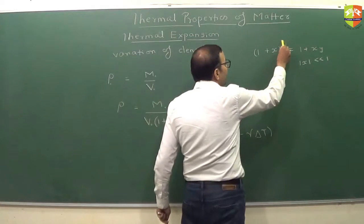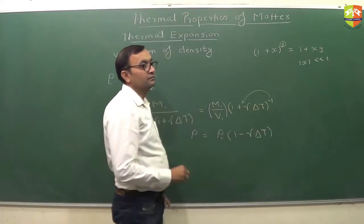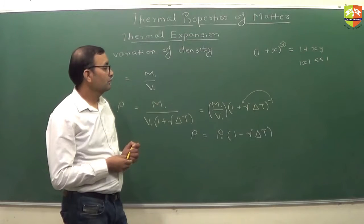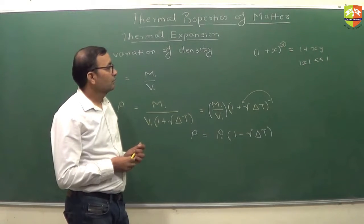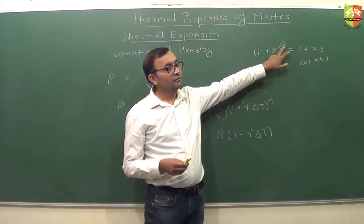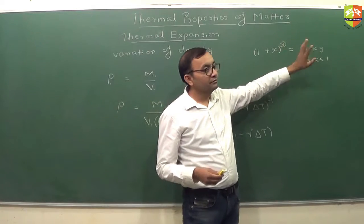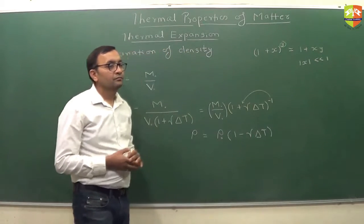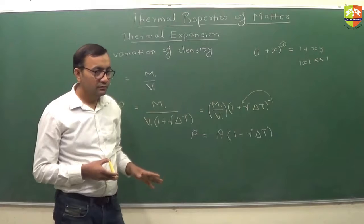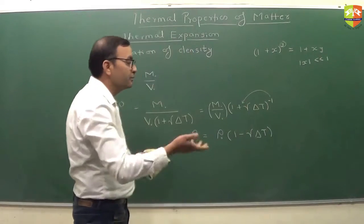See here, y is minus 1. So shouldn't that be 1 minus x? Here, y can be anything. Y can be negative also. So if y is negative, it will be negative. Any doubts here? Let's quickly do a numerical on this. Then we'll proceed to the next property.